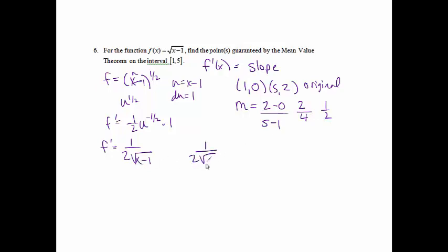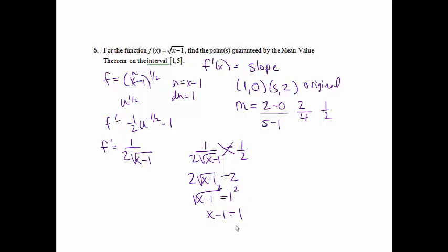The final step is to set the derivative equal to the slope. Since we have two fractions, we cross multiply: 2√(x − 1) = 2. Dividing both sides by 2 gives √(x − 1) = 1. Squaring both sides gives x − 1 = 1, so x = 2. The point guaranteed by the Mean Value Theorem occurs at x = 2.